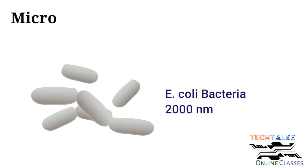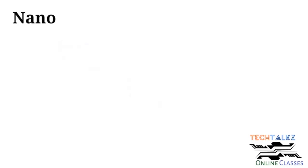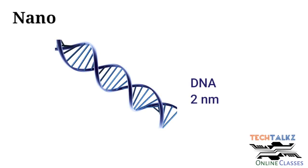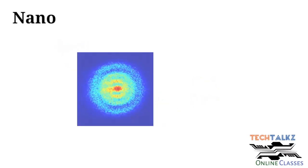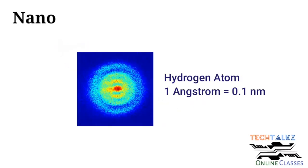Now, let us see the nanoscale when compared to macro and micro. Here, the diameter of DNA is only 2 nanometer. The size of hydrogen atom is in the range of 0.1 nanometer, approximately.